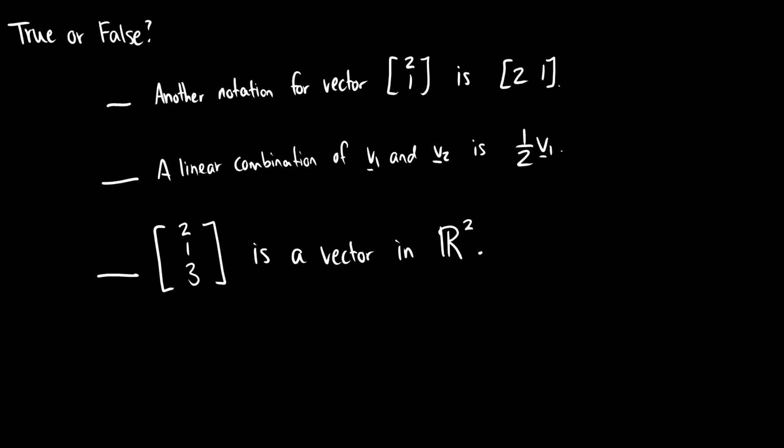So here's some true or false questions, just to make sure that we understand what linear combinations are and how we work with vectors. First one, another notation for the vector [2,1] in a column is [2,1] in a row. And we know this is false because a column vector is in a column. This matrix [2,1] is two vectors. So it's a one-dimensional vector. And then we have the second vector looks like this. In the first example here, the column vector [2,1] looks like that.